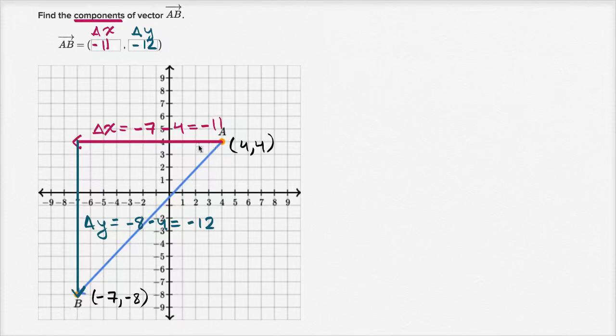And you could see something interesting that I've just set up here. You could view this bigger vector, vector AB, as being constructed of this vector that goes purely in the x direction, and this vector that goes purely in the y direction. If you were to add this red vector to this dark blue-green vector, you would get vector AB. But we'll talk more about that in future videos.